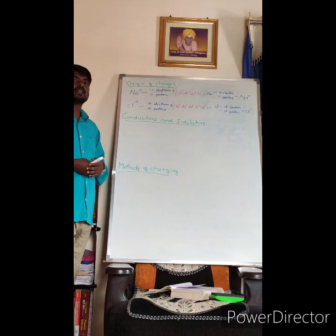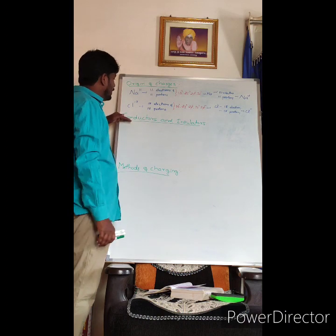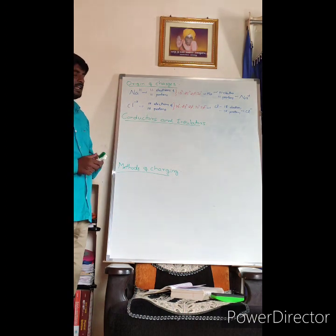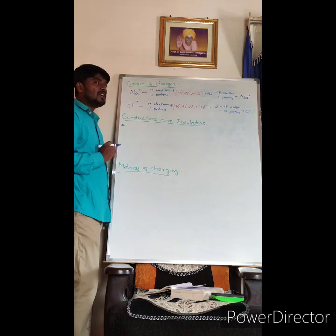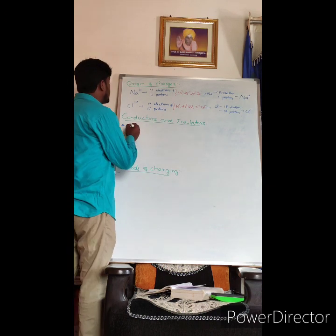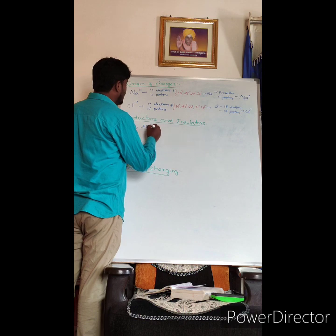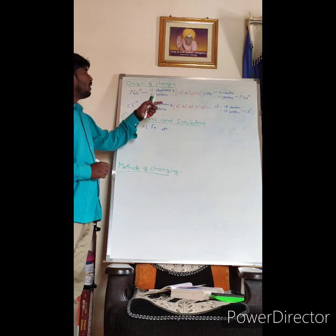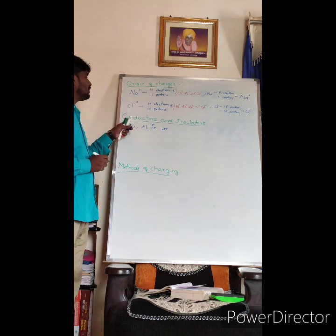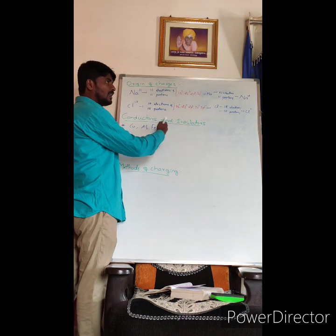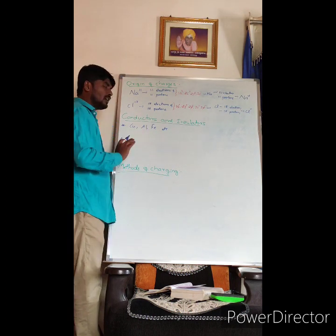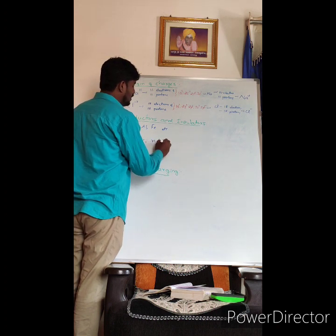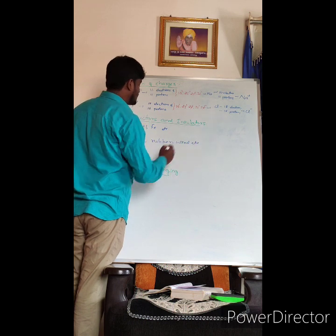Now let us go to the next topic: conductors and insulators. Conductors are materials that allow the complete flow of electric charges through them. Examples are copper, aluminum, iron, etc. Insulators do not allow any flow of charges through them. Examples are plastic, rubber, and wood.